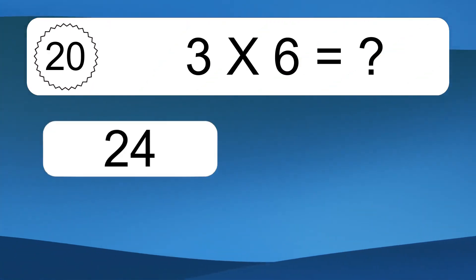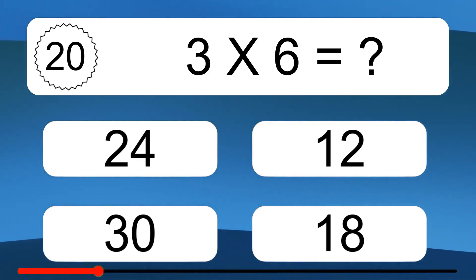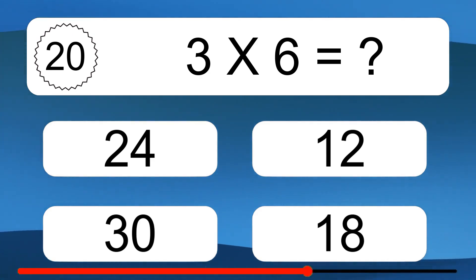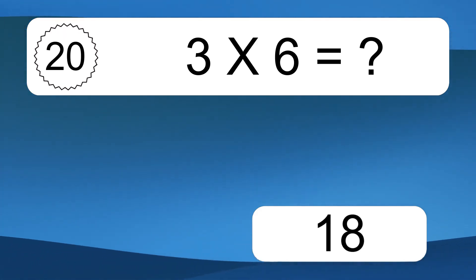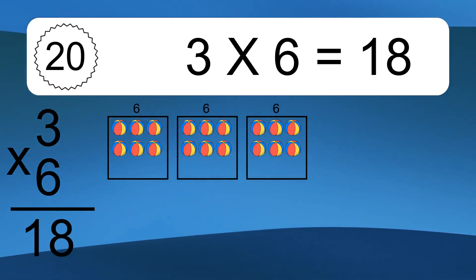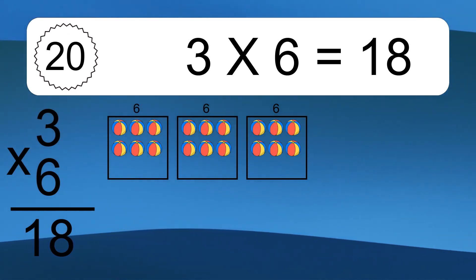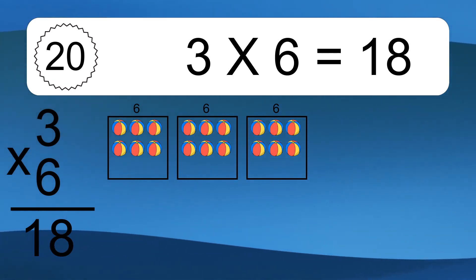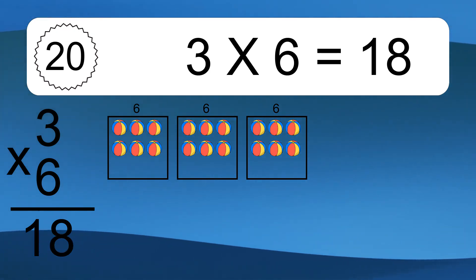3 times 6 equals what? 3 times 6 equals 18. We have 3 boxes and each box has 6 colorful balls inside. If you count all the balls in all the boxes together, you will have 3 times 6 balls. This equals 18 balls.